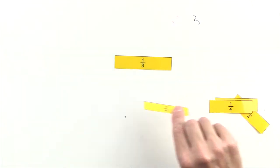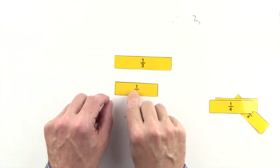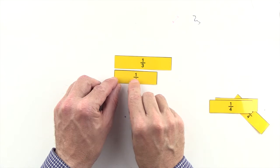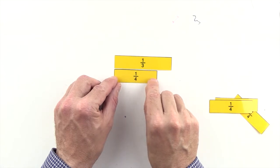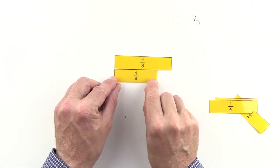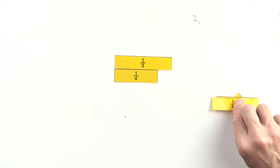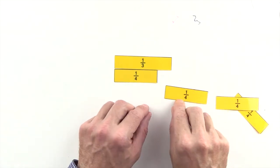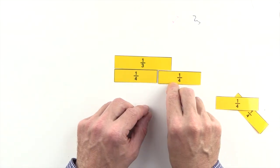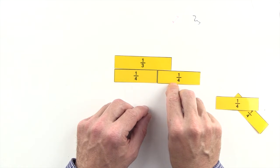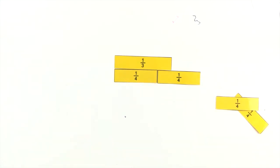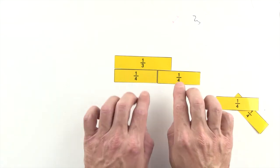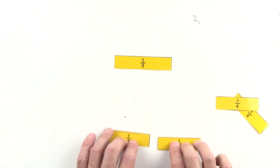Let's try quarters. 1 quarter is less than 1 third, and 2 quarters are greater than 1 third. So again, it looks like we can't use quarters to make an equivalent fraction to 1 third.